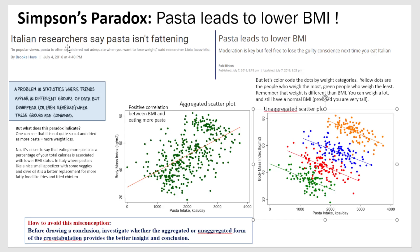Simpson's Paradox in statistics refers to contradicting views of data. For example, when you have trends appearing in different groups of data — an un-aggregated scatter plot showing subgroups versus an aggregated plot of the same data — you see a positive relation in one and a negative correlation in the other. Basically, whatever trend you're seeing in the different groups either disappears or even reverses when the groups of data are combined.